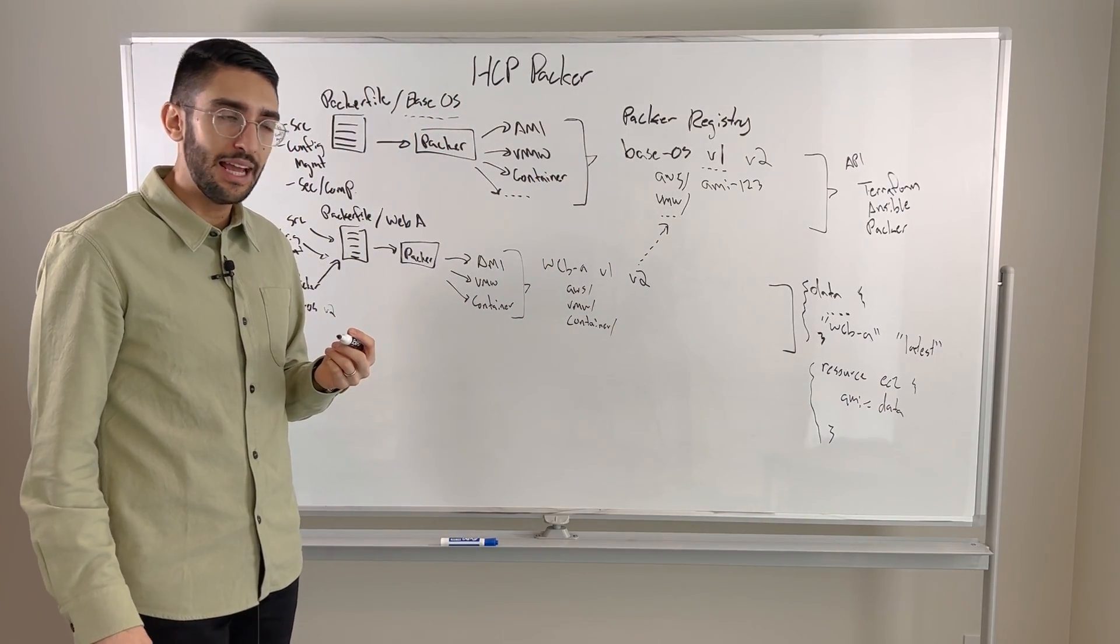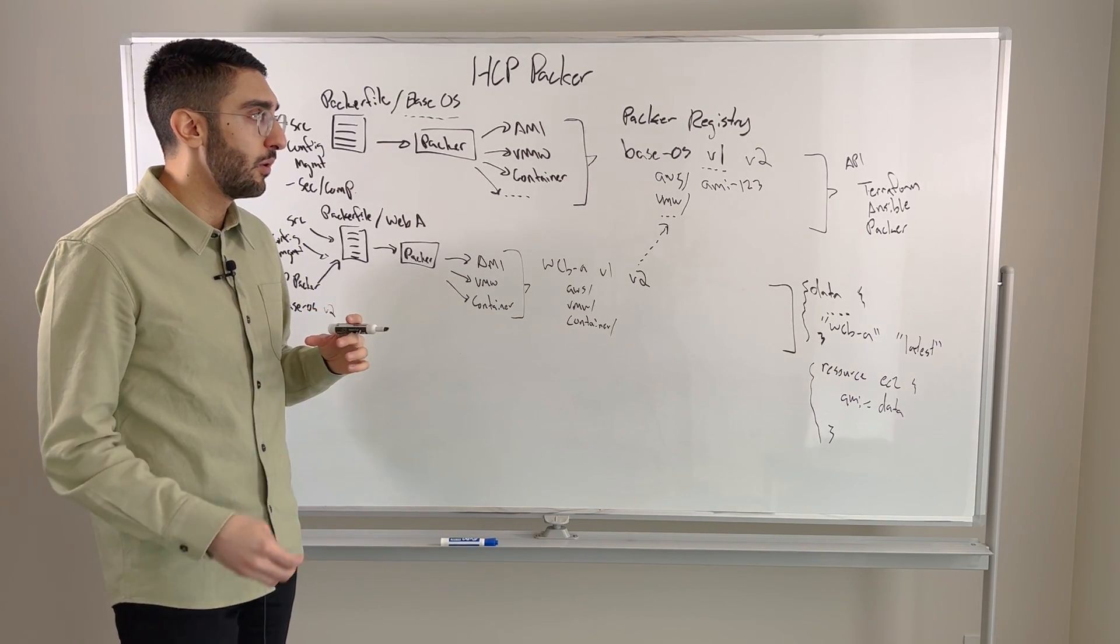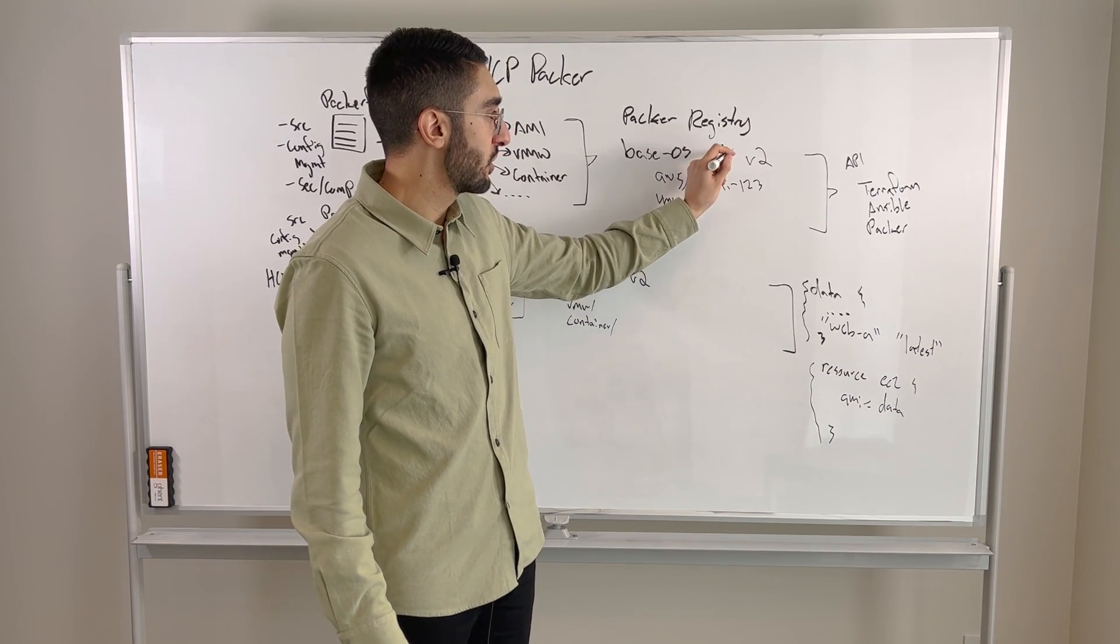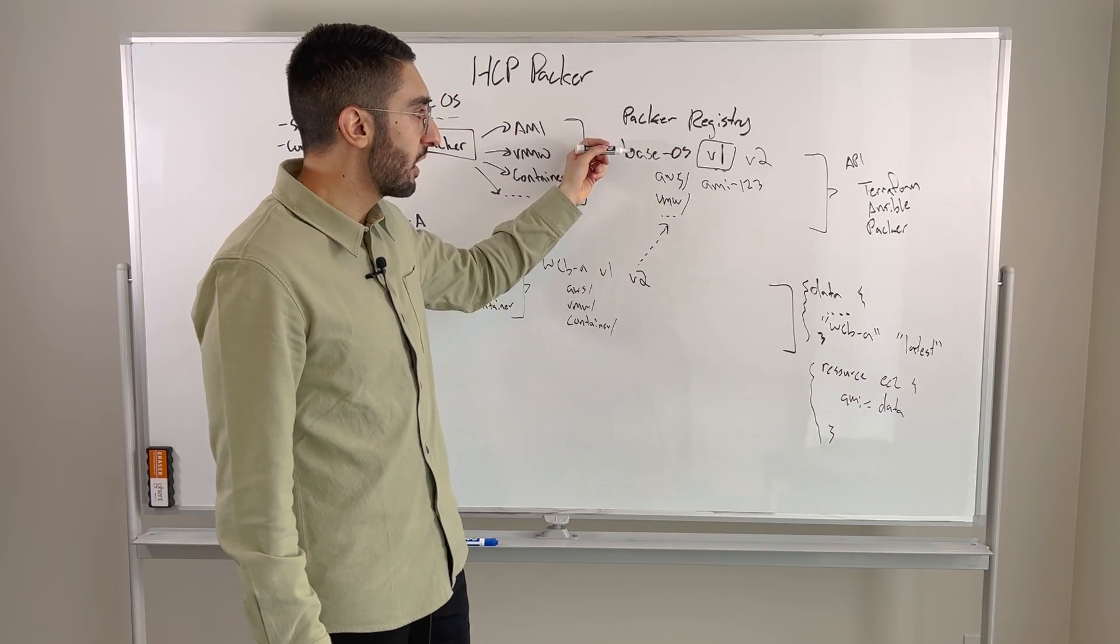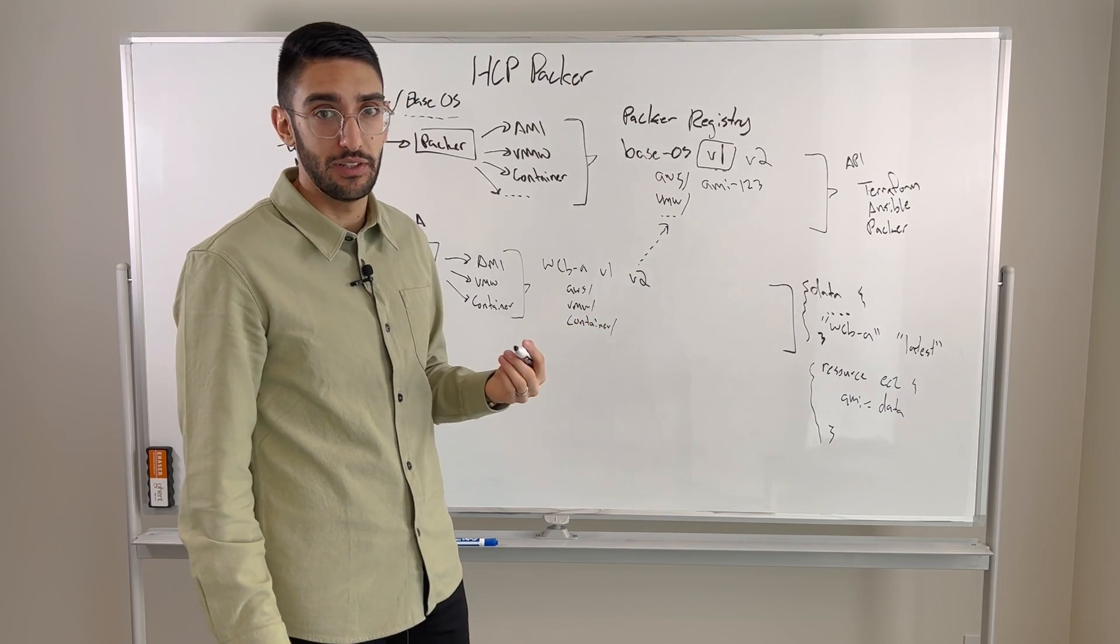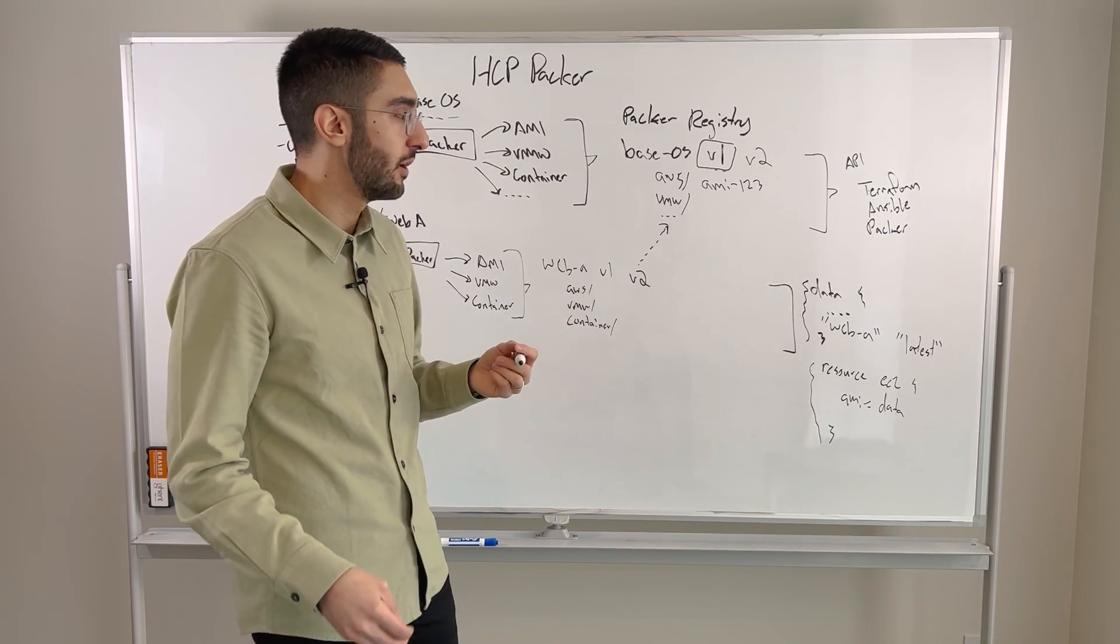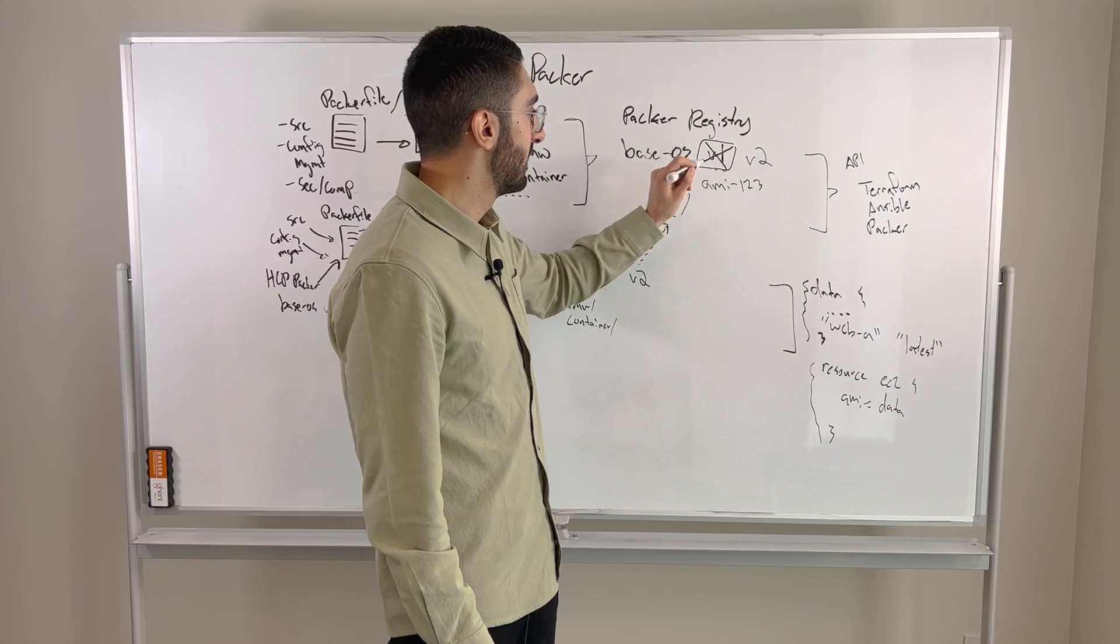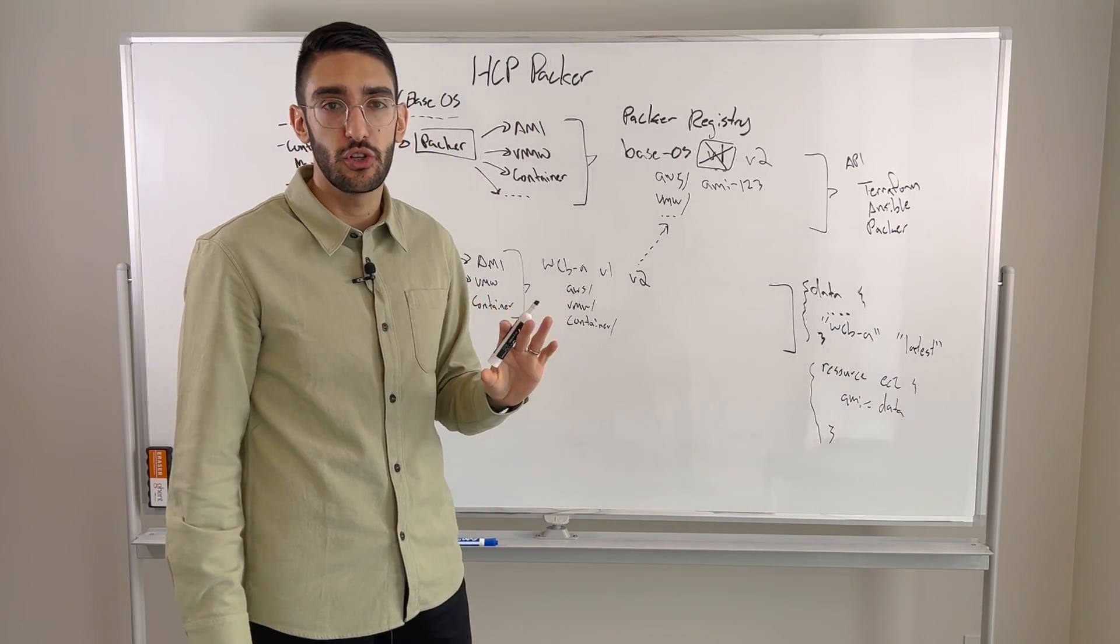So where does this start to come in handy is when we start to think about security remediation. For example, we might discover that not only did we build version 2 of our base OS image, but in fact version 1 now has a known vulnerability. And so we no longer want to deploy base OS version 1, and any image that was built on top of version 1, we also don't want to deploy. So this then allows us to get into a true security remediation workflow, where we can now come into the Packer registry and basically say, I want to revoke the ability to deploy version 1. This thing has known bad, you should no longer be able to deploy it.